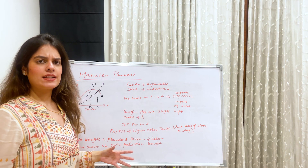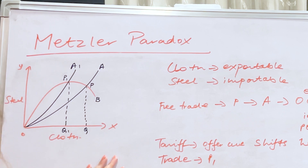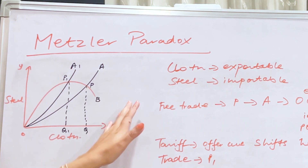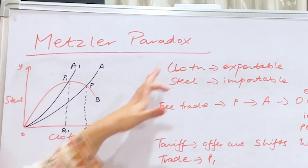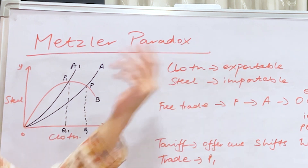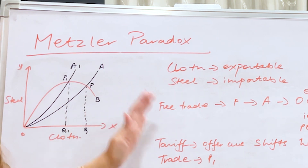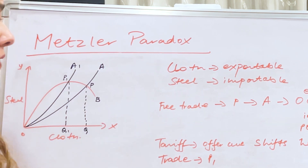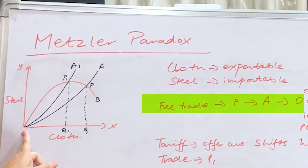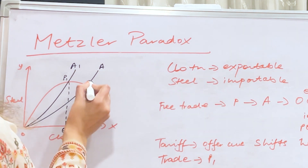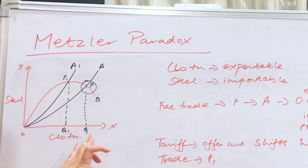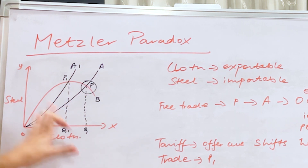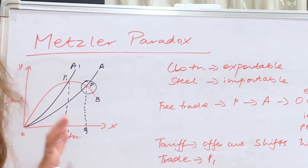Now coming to the diagram. On the x-axis we have cloth, and on the y-axis we have steel. OB is the offer curve for country B, whereas OA is the offer curve for country A. Cloth here is the exportable commodity, whereas steel is the importable commodity. Under free trade with no tariff, the offer curves of both countries intersect at point P. At this point, we export OQ amount of cloth and import PQ amount of steel.